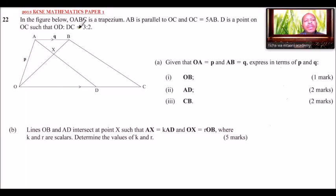Question number 22. In the figure below, OABC is a trapezium. AB is parallel to OC and OC equals 5AB. So we have a trapezium here, OABC. We are told OC is 5 times AB. D is a point on OC such that OD to DC is 3 to 2. We can put this information here: this is 3 and this is 2. We can say this is 3Q and this is 2Q because OC is 5 times AB and AB is Q. It's important that you put the necessary information on your figure so that when it comes to working out, you'll be able to see that.